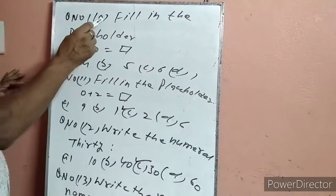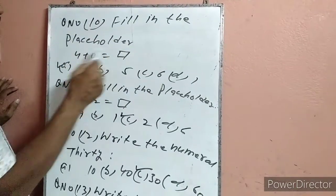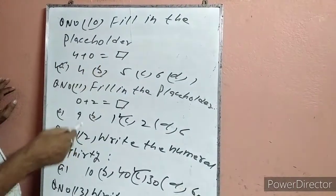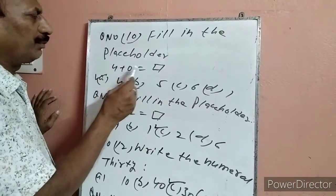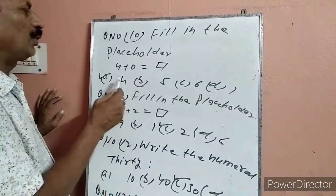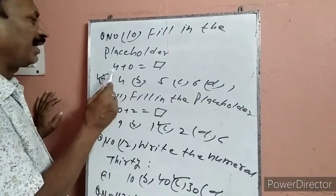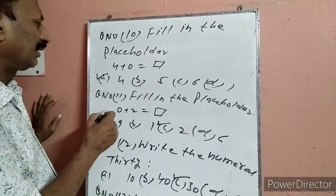Question 10: Fill in the blank — 4 plus 0. 4 में 0 add करेंगे, 4 ही होगा. 4 कहां पर है — A पर. इसलिए हमने A पर टिक लगा दिया.